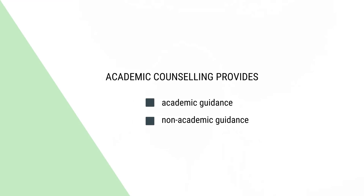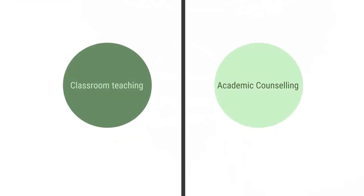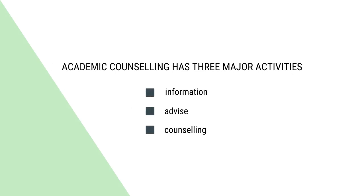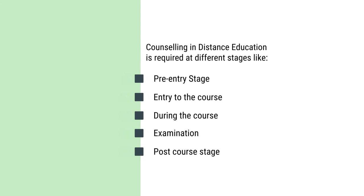That is it for this particular video. To summarise all three videos: academic counselling in distance education is for providing academic and non-academic guidance to learners, but it is different from the classroom situation. Academic counselling involves both tutoring and counselling. It has three major activities — informing, advising, and counselling. Counselling in distance education is required at different stages, which are not watertight compartments but are meant to help counsellors: pre-entry stage, entry to the course, during the course, examination stage, and post-course stage.